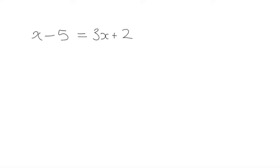I want you to try the next example for yourself — pause the video now, do it in your homework books, and we'll go over it. You've got the larger number of x's on one side, so we're going to leave x's on that side and get rid of the numbers from it, and get rid of all x's from the other side. You always want one side with only x's and the other side with only numbers.